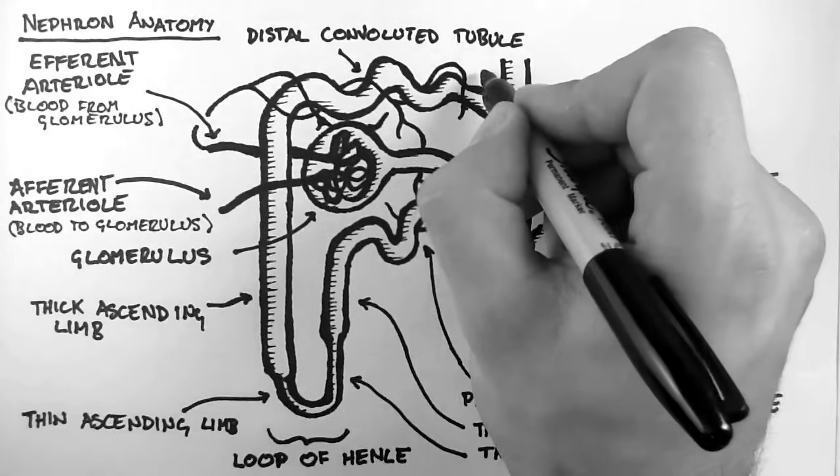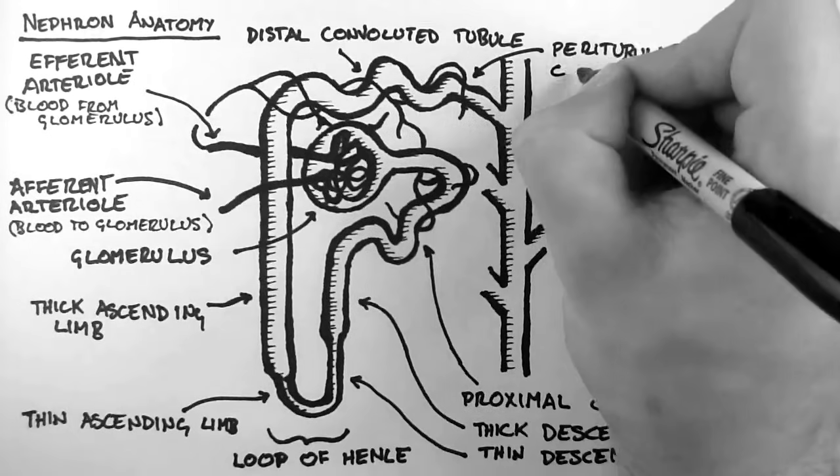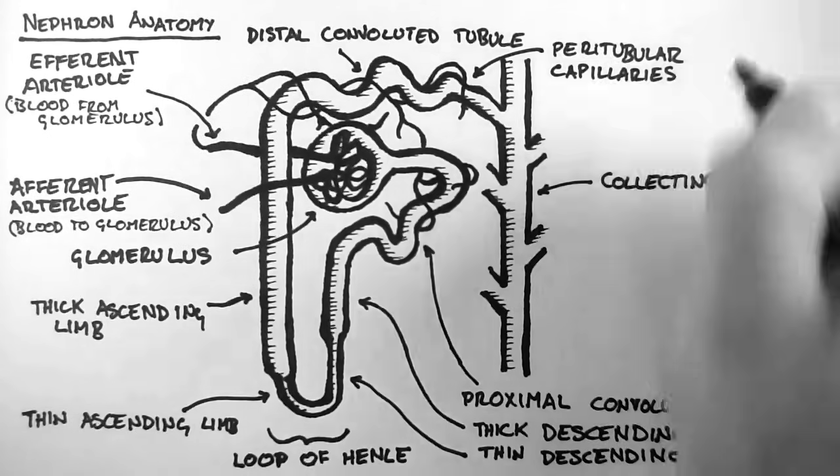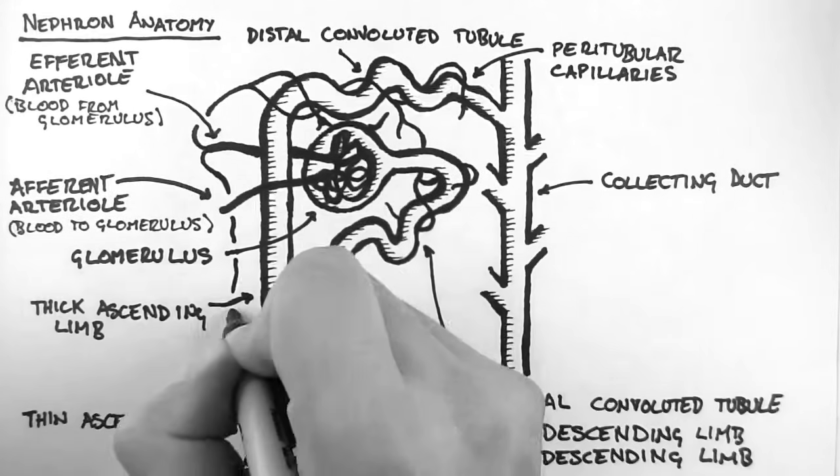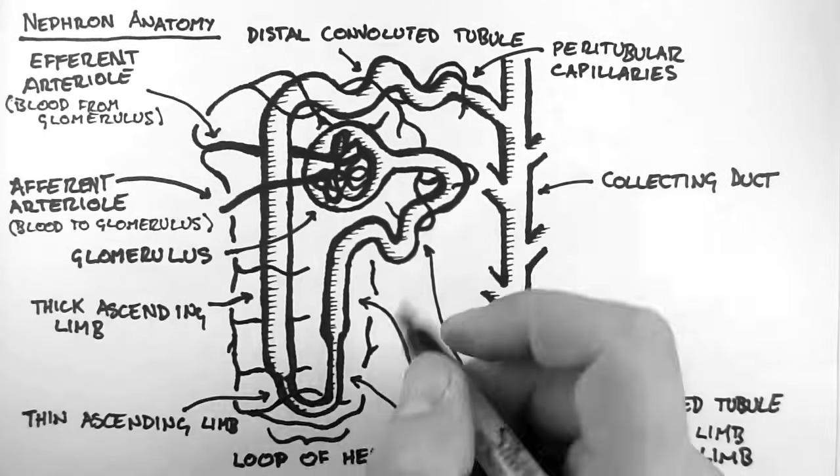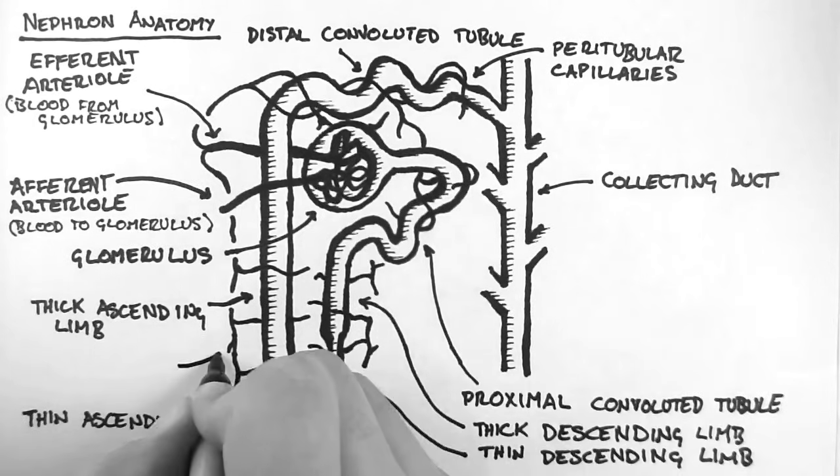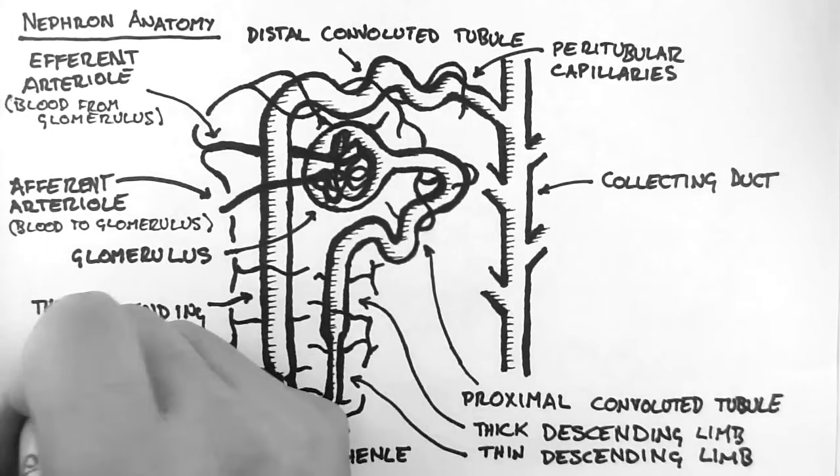The first is the peritubular capillaries, which supply blood to the proximal and distal tubules. The other is the vasa recta, which supply blood to the loop of Henle.